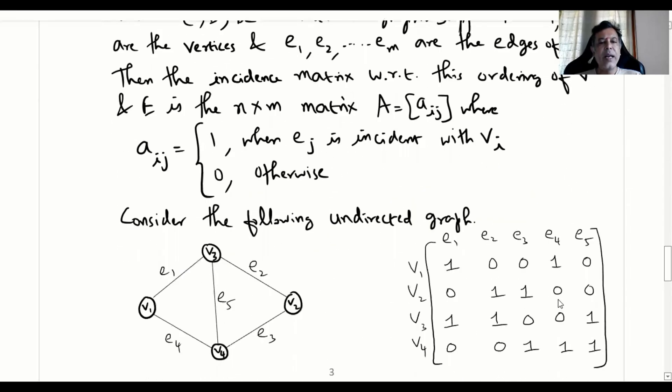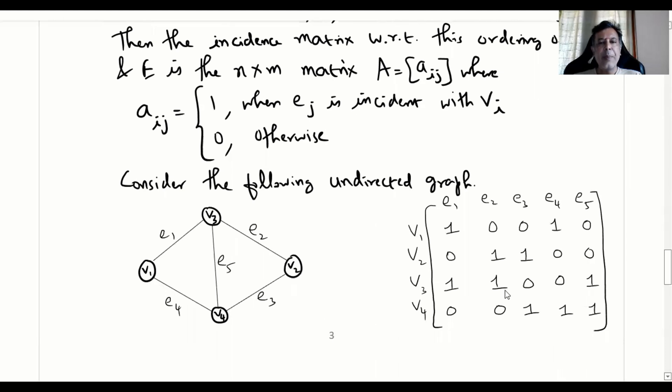Consider the following undirected graph like this. How do we represent here? So again, it will be represented with 0s and 1s. We may notice here in rows we are specifying vertices, in columns we are specifying edges. This is about incidence. Now, vertex v1 is incident with e1, so you put 1 over there. Vertex v1 is not incident with edge 2, so there you put 0. Similarly, vertex 1 is not incident with e3, there you put 0. Likewise, wherever there is an incidence found, there you put 1, otherwise you put 0.